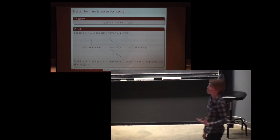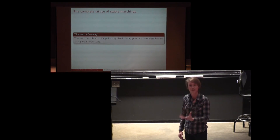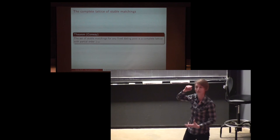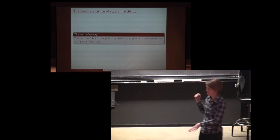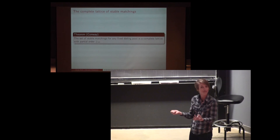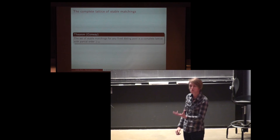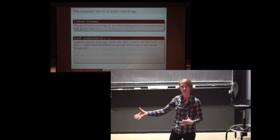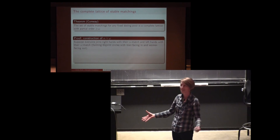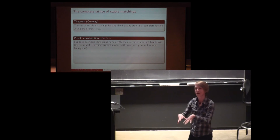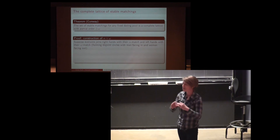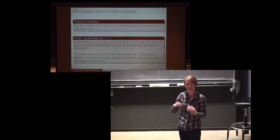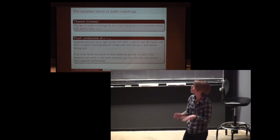By an observation of John Conway, there is a complete lattice of stable matchings for any fixed dating pool — there's a best for all men stable matching found by Gale-Shapley, and also a worst for all men stable matching, and given any two matchings there's a sup and an inf. Conway's construction of the sup of two stable matchings alpha and omega is this: imagine everybody joins right hands with their alpha match and left hands with their omega match. You get disjoint circles with the men facing in and the women facing out. If you drop hands and point at your preferred partner, within each circle everyone is pointing in the same direction, so men and women disagree on which of alpha and omega is better.